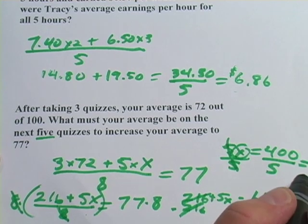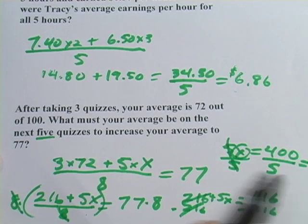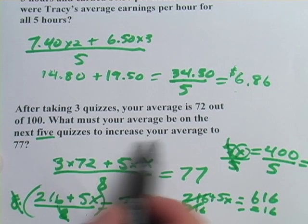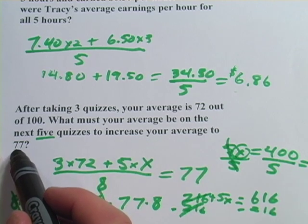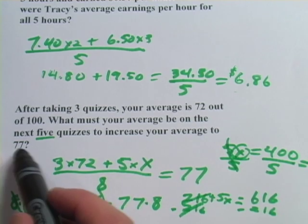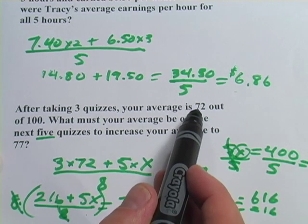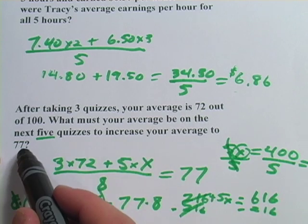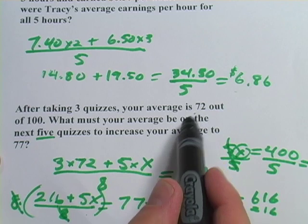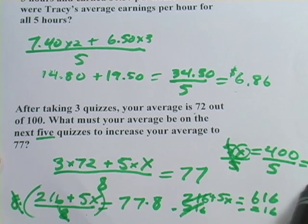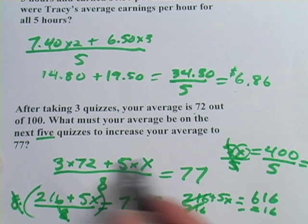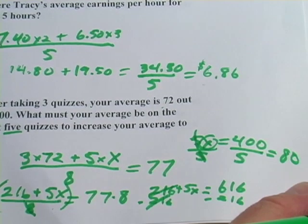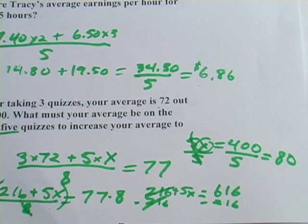Let's see if that makes sense. What we were looking for is: what do you have to average on the next five quizzes to increase your average to 77? You had been scoring 72 — if you want to get up to 77, you'd need to score higher than that. You're putting 72s in with the 80s, and 80 makes sense because 80 is higher than 77. So that is a particularly tricky one with averages — the answer is 80.